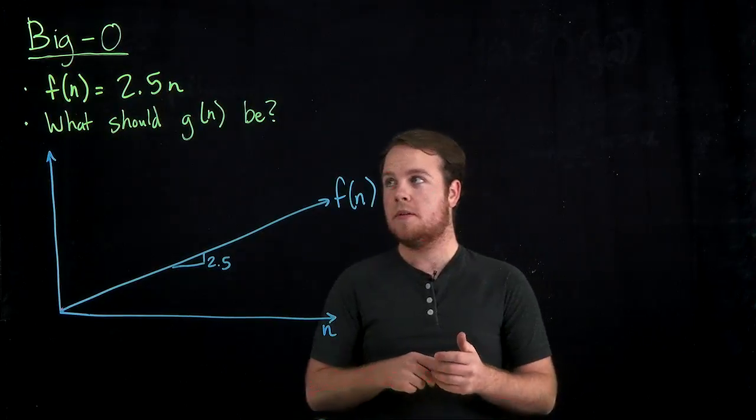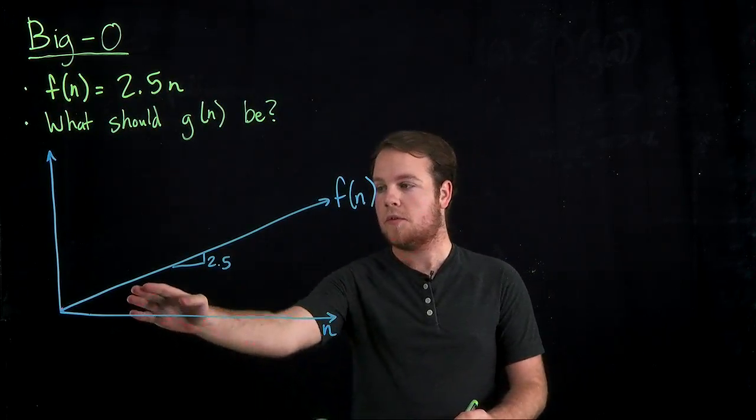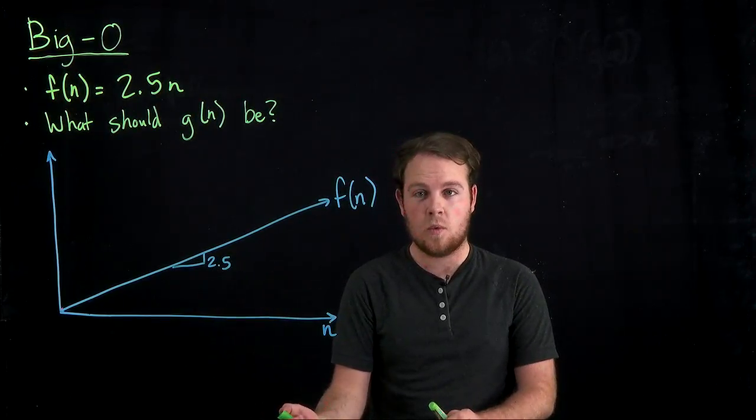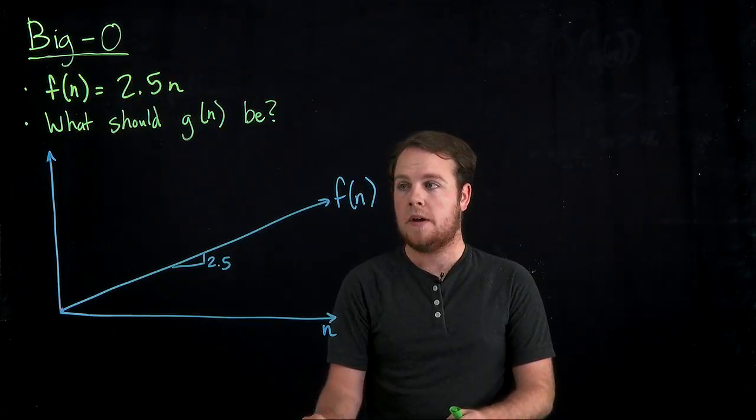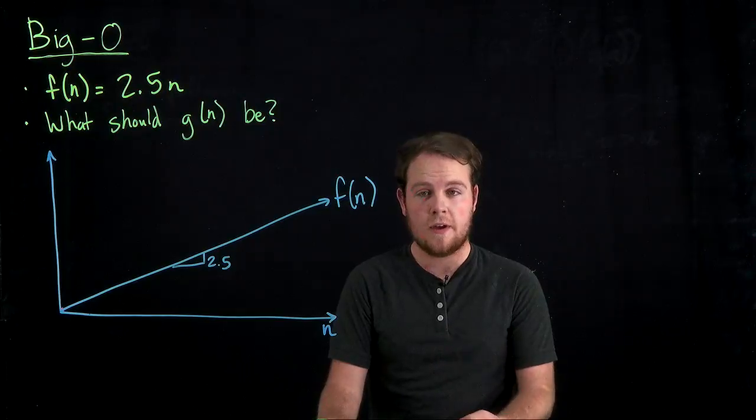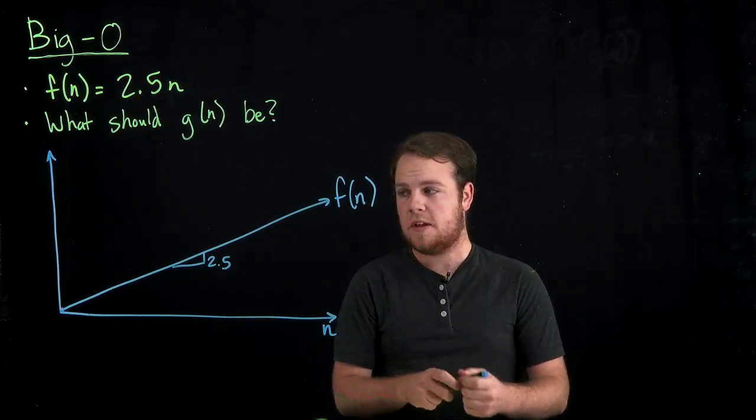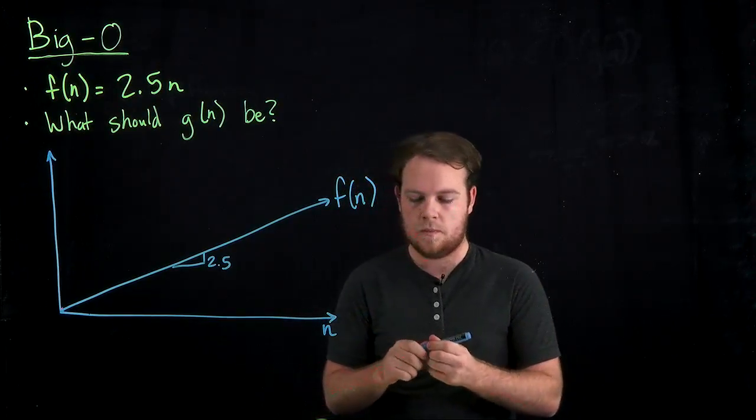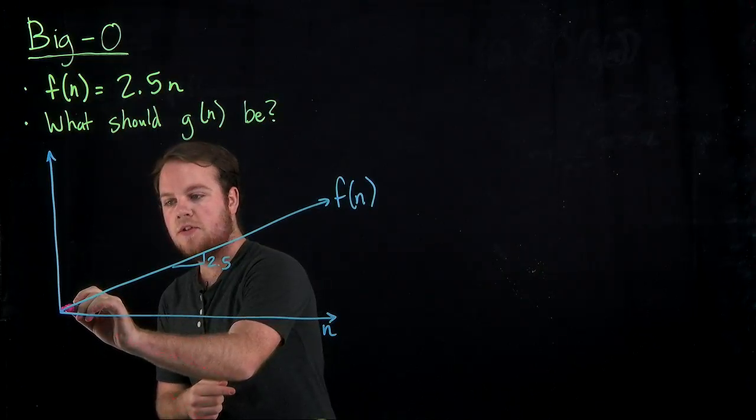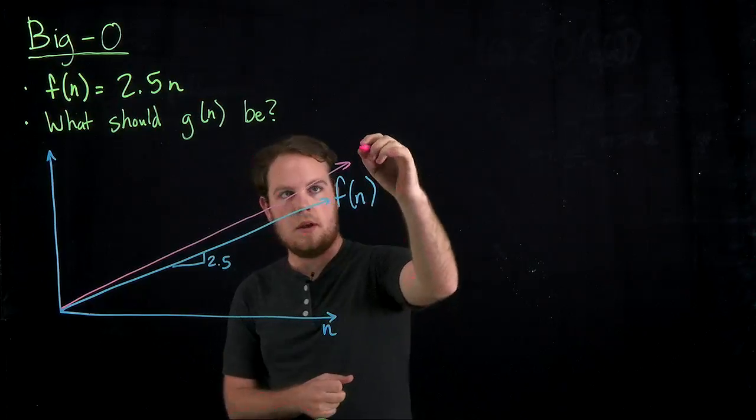All right, so we have a problem here. We're given that our f of n is 2.5n, so I've graphed it right here. Our slope is 2.5. Our goal is to find what g of n should be. Remember that g of n only needs to satisfy the fact that it is larger than f of n after some point,